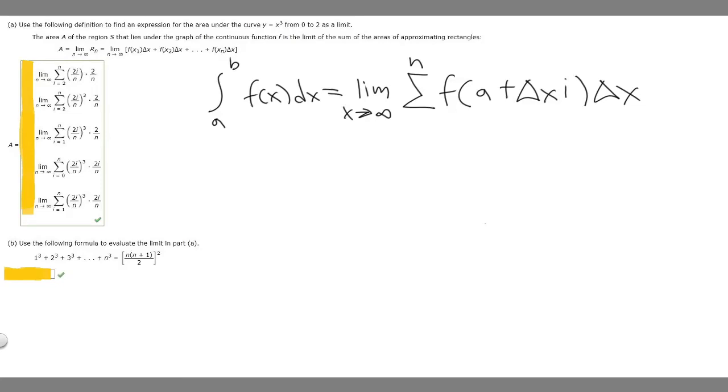So in this problem, we're told to use the following definition to find an expression for the area under the curve y equals x cubed from 0 to 2 as a limit. And we're told that the area of the region S that lies under the graph of the continuous function f is the limit of the sum of the areas of approximating rectangles.